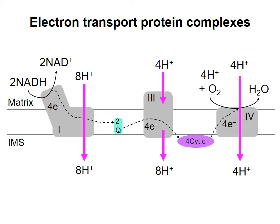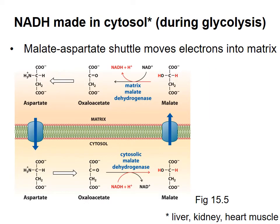Different cell types have different ways of getting electrons from NADH in the cytosol into the electron transport chain. I'll describe how this is done in liver, kidney, and heart muscle cells. This figure shows a series of reactions that make up something called the malate-aspartate shuttle. The membrane in the middle is the inner mitochondrial membrane, the area on the top is the matrix, and the area on the bottom is the intermembrane space.